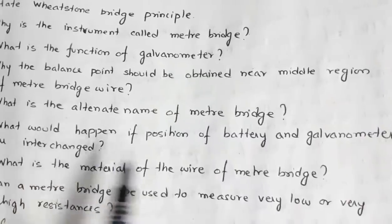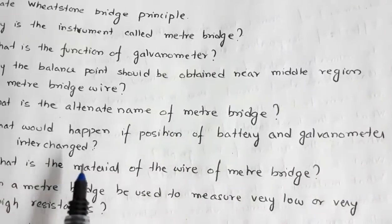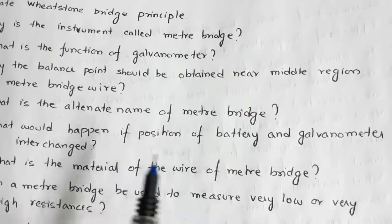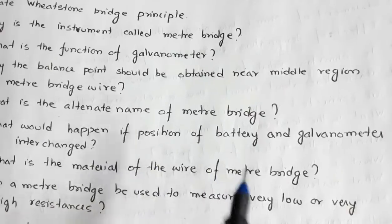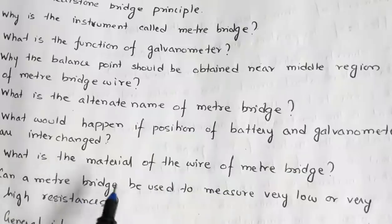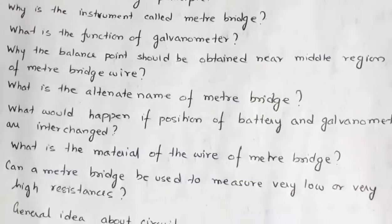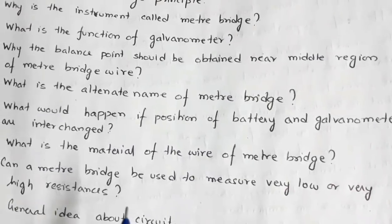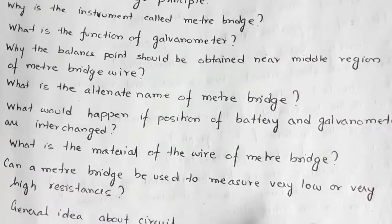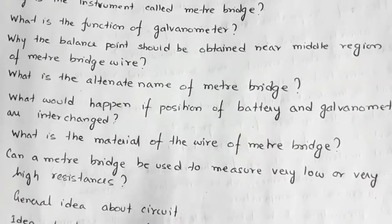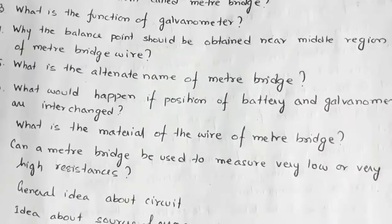What would happen if the positions of the battery and galvanometer are interchanged? The balancing length will remain invariant — you will get the balancing length at the same position. What is the material of the wire of the meter bridge? It is constantan, because it has a low temperature coefficient of resistance. Can a meter bridge be used to measure very low or very high resistance? No, you cannot measure very low or very high resistance using a meter bridge.